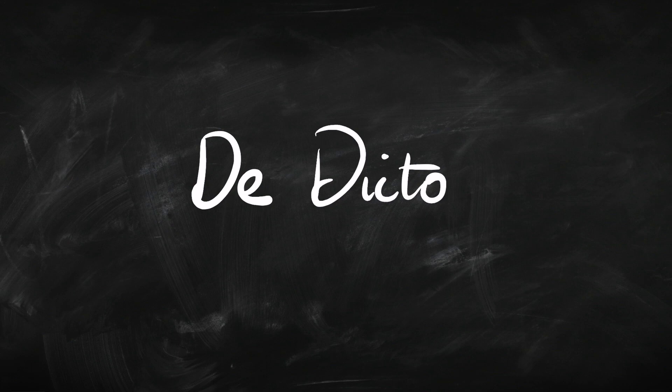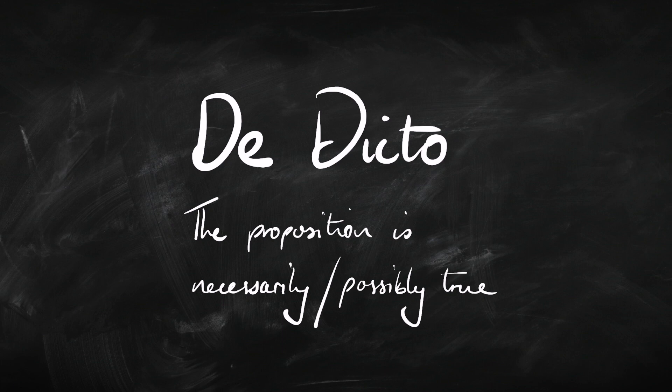Let's start with de dicto. When we're talking about de dicto necessity or possibility, we're really talking about a proposition — a sentence that's true or false — and we're saying that it's necessarily true or false, or that it could be true or false. So necessarily A, de dicto, means that A is necessarily true. Possibly true de dicto means that A could be true.